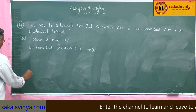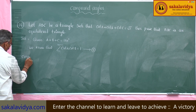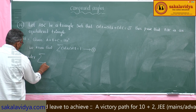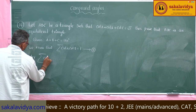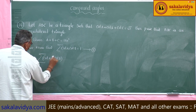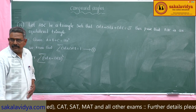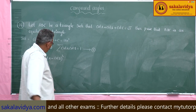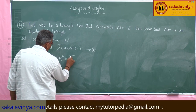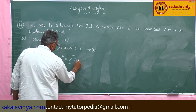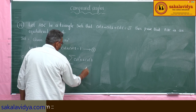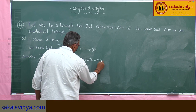Now, consider sigma (cot A minus cot B) whole square. This is equal to sigma (cot squared A plus cot squared B minus 2 cot A cot B).